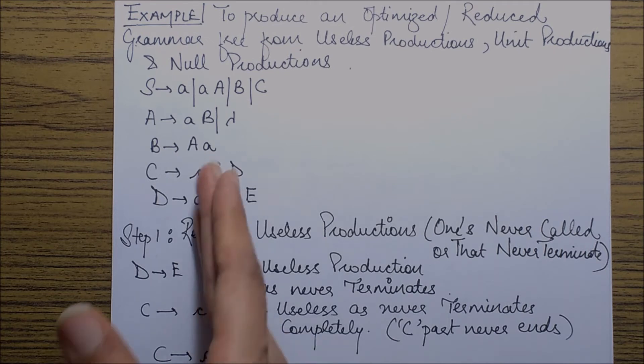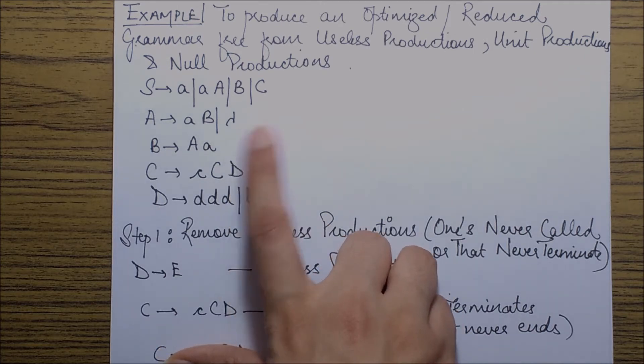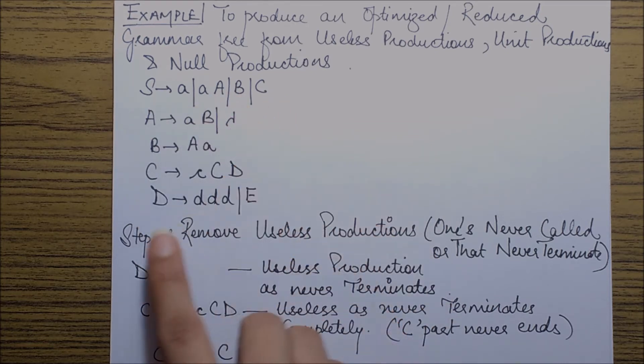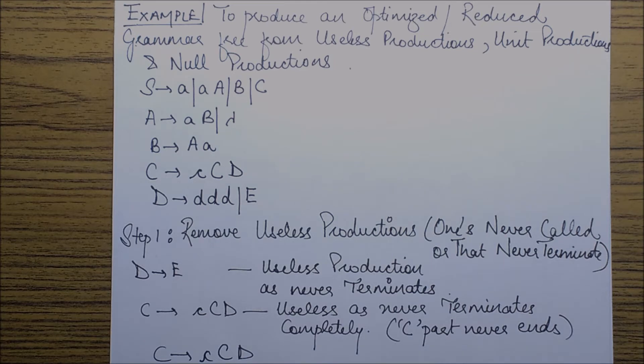This is a context-free grammar and it contains a null production over here, a unit production S goes to C, another unit production S goes to B, another unit production D goes to E, and it might also contain many useless productions. The useless productions, as you can recall, are the ones which are either never called upon or that do not terminate.